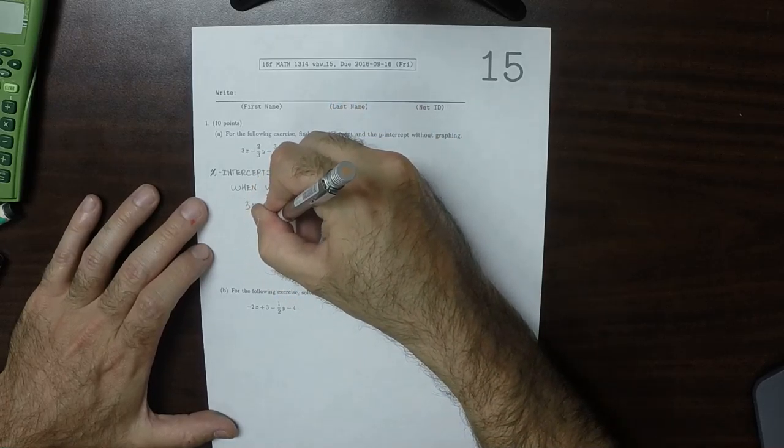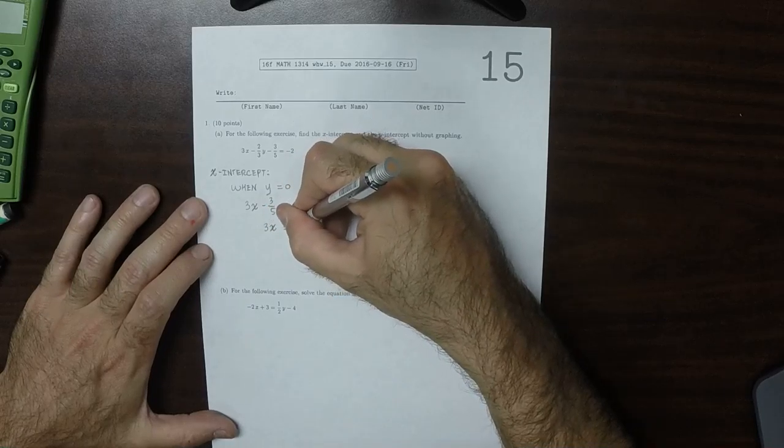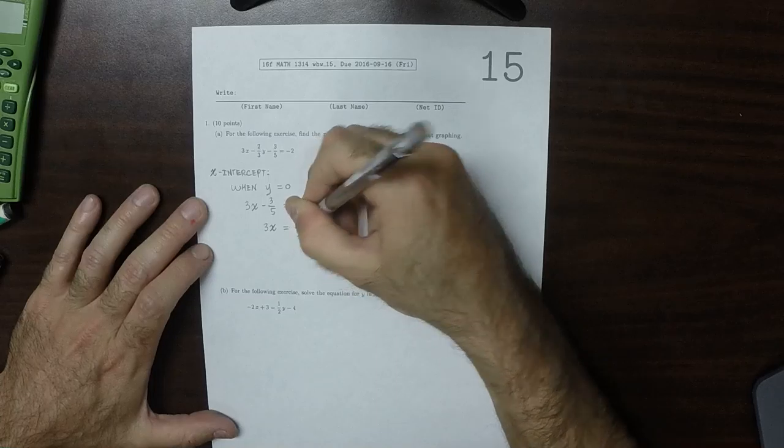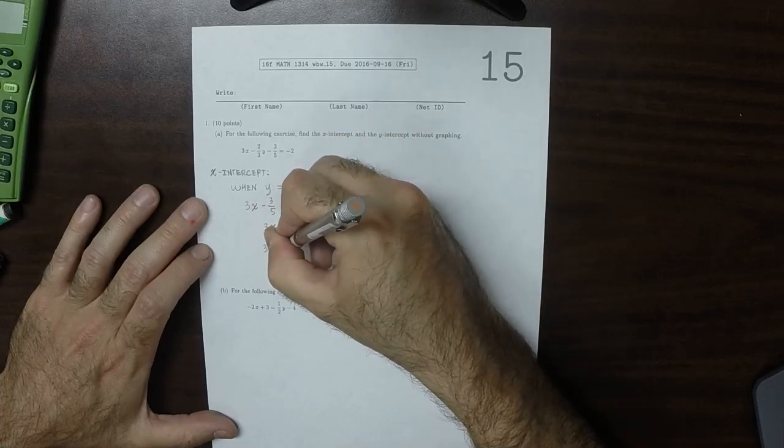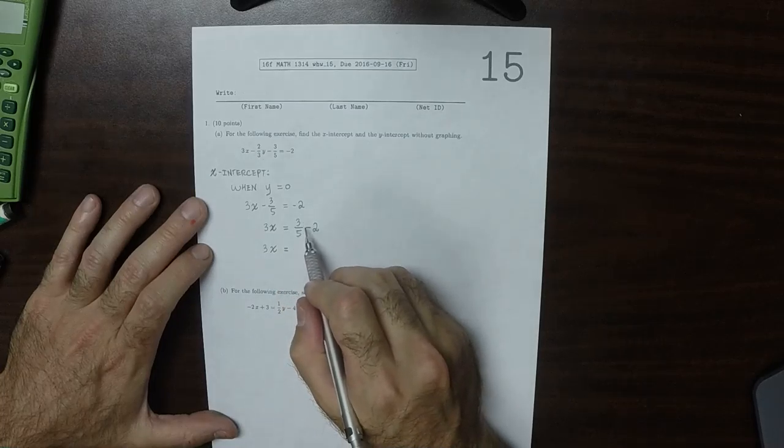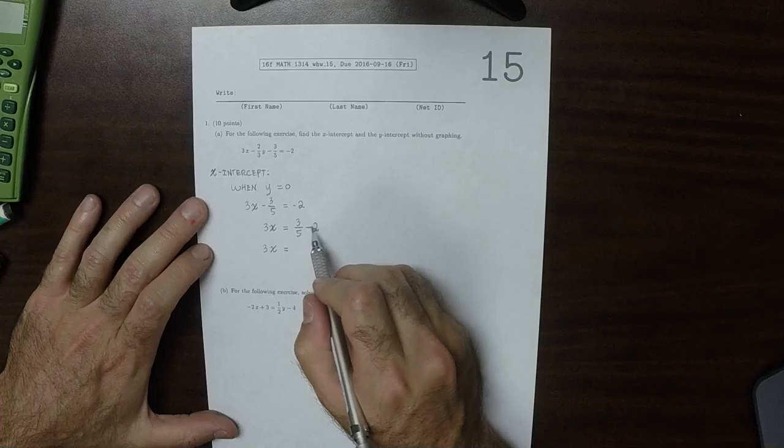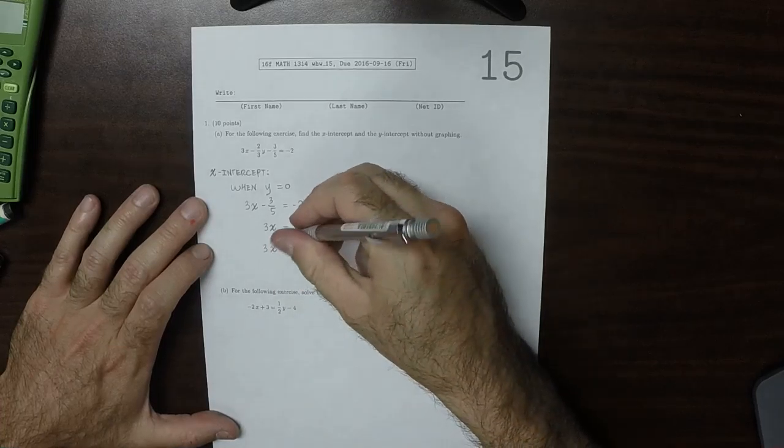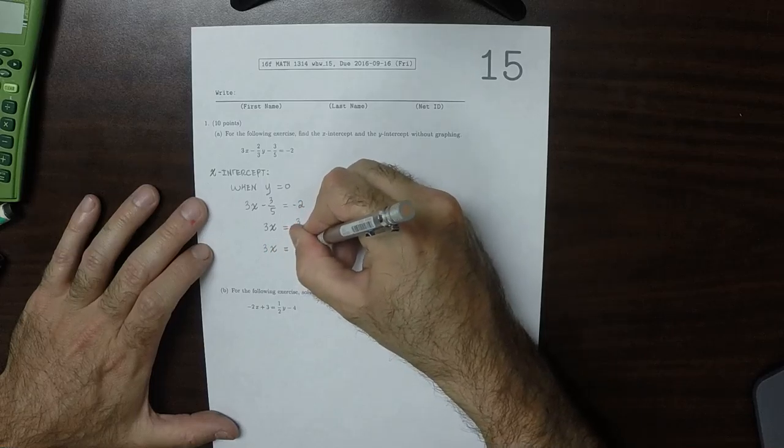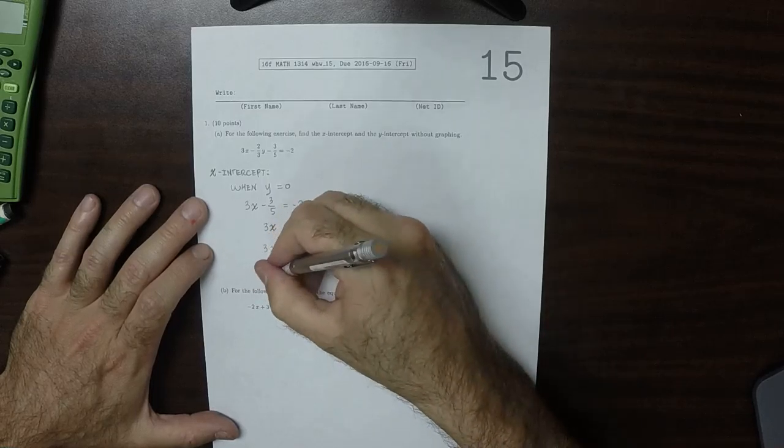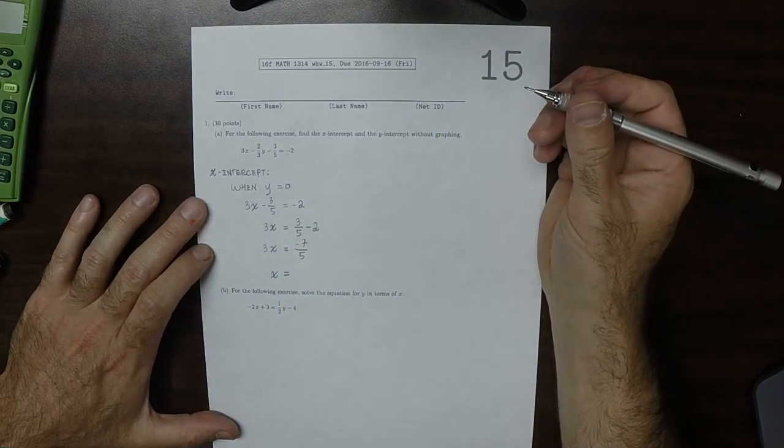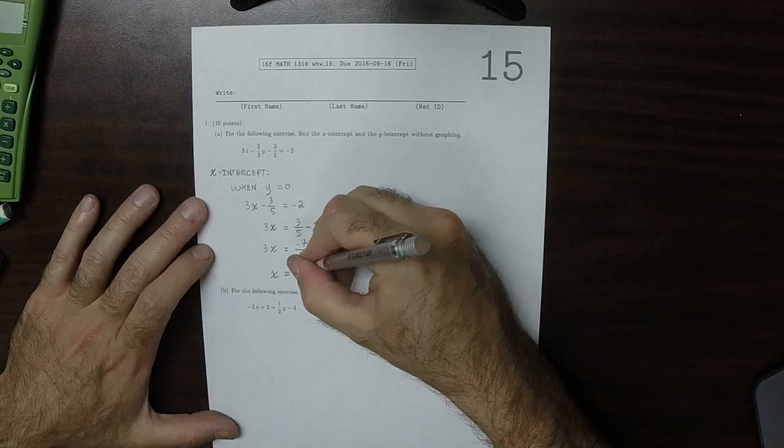So that would be 3x is 3 over 5 minus 2. So 3x is, well, that would be 3 over 5 minus 10 over 5. So 3 minus 10, that's negative 7 over 5.